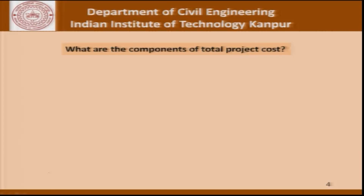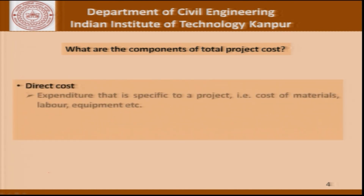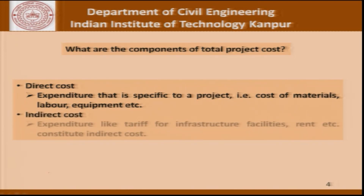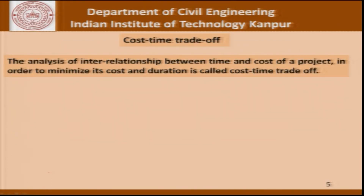What are the components of total project cost? One component is direct cost which comprises expenditure specific to a project — cost of materials, labour and equipment. Indirect cost includes expenditure like tariff for infrastructure facilities, rent and so on. Cost-time trade-off is what we talk about really: the analysis of the interrelationship between the time and cost of a project in order to minimize its cost and duration is called the cost-time trade-off.